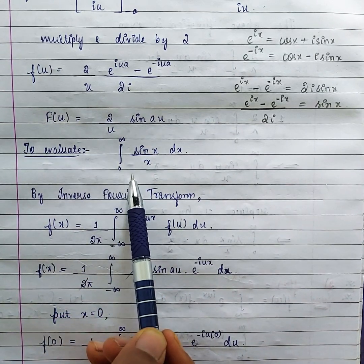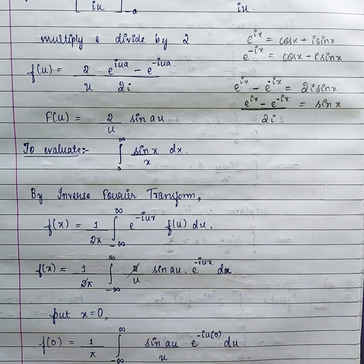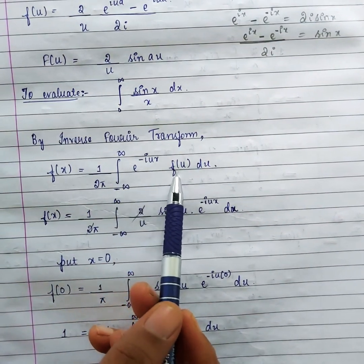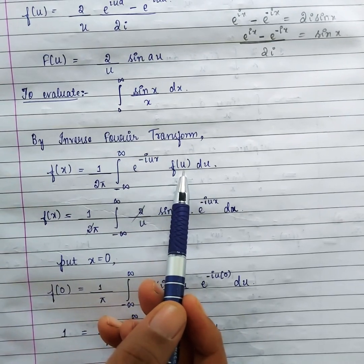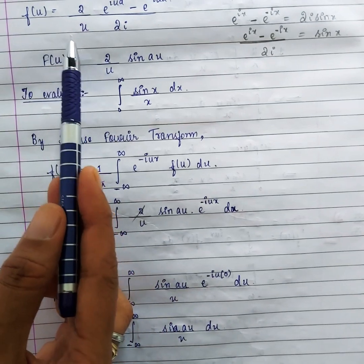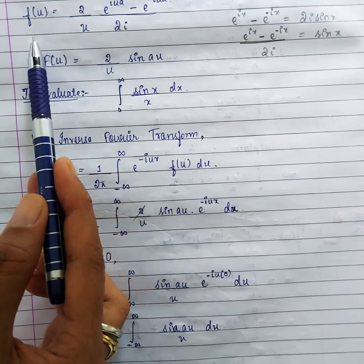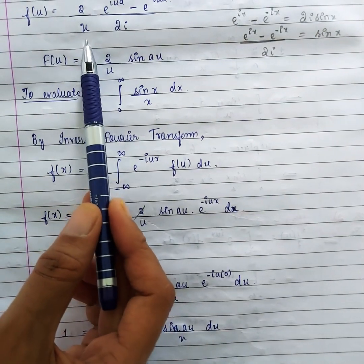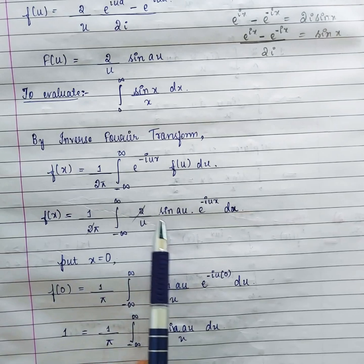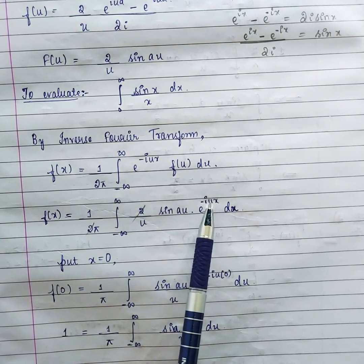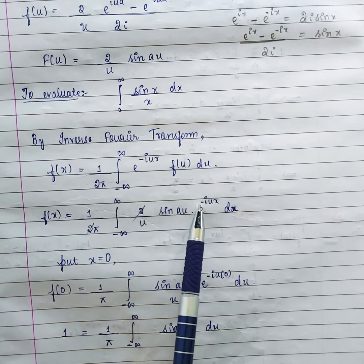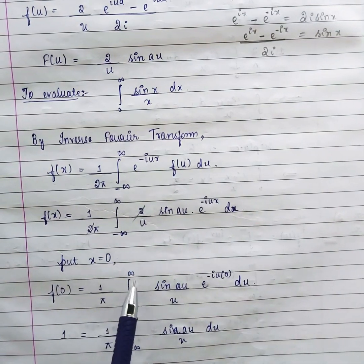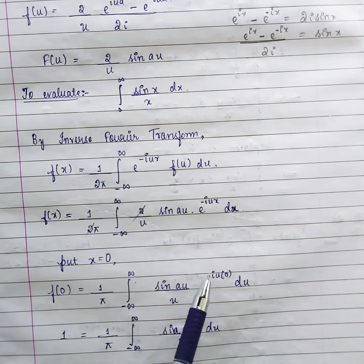To evaluate the integral, we use the inverse Fourier transform formula: f(x) = 1/(2π) times the integral from minus infinity to infinity of e^(−iux) f(u) du. Note it is e^(−iux) in the inverse transform, not e^(iux). Substituting f(u) = 2 sin(au)/u, the 2 in the numerator and the 2π cancel to give 1/π, yielding f(x) = 1/π times the integral from minus infinity to infinity of [sin(au)/u] e^(−iux) du.